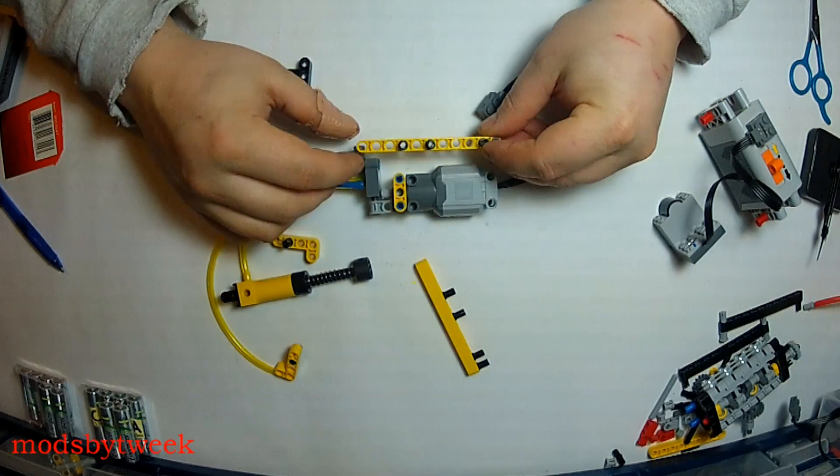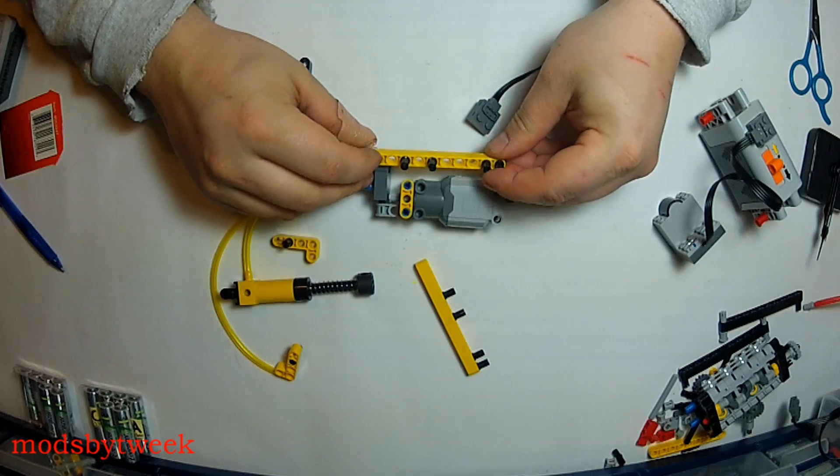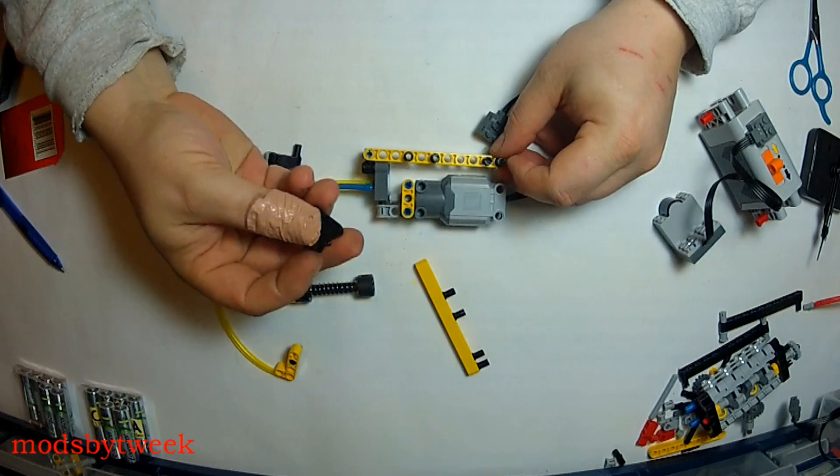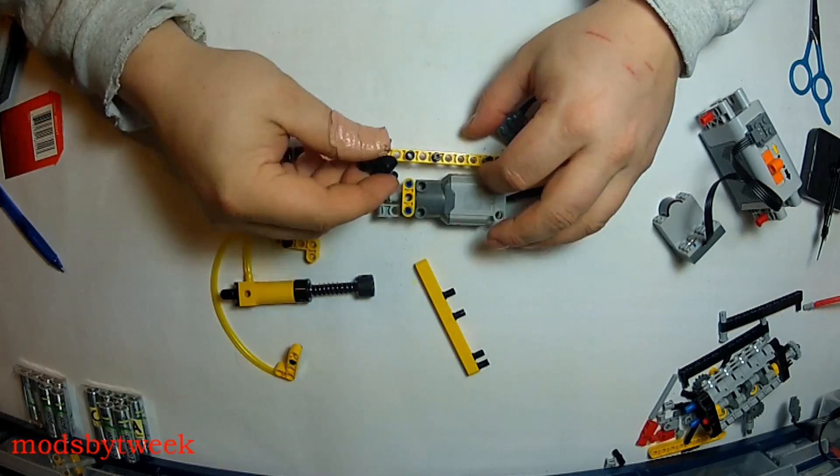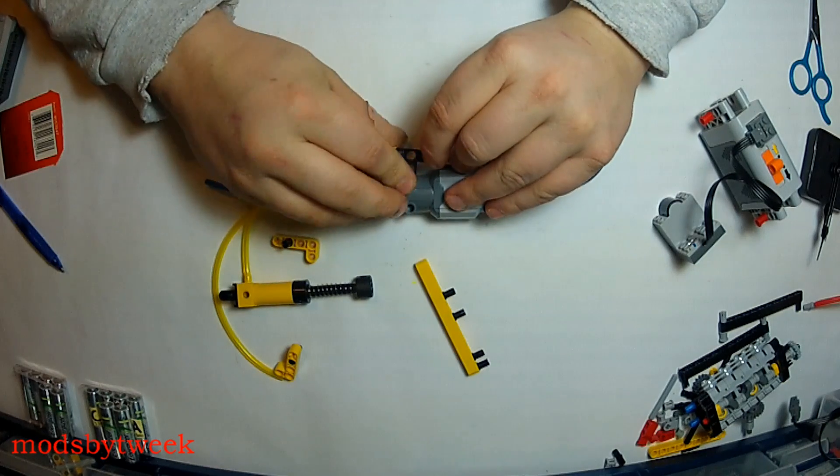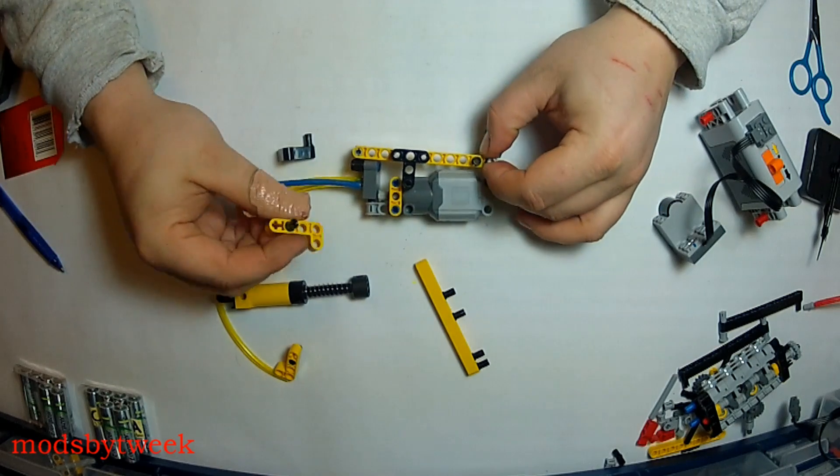You want to take this and set her in just like so. Take one of these Ts, the black one on the end, and stick it in right here.